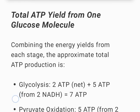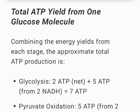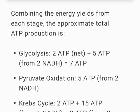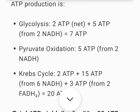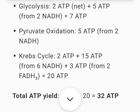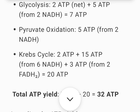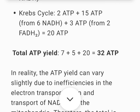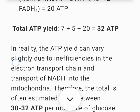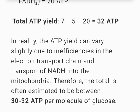Total ATP yield from one glucose molecule, combining the energy yields from each stage: Glycolysis: 2 ATP net plus 5 ATP from 2 NADH equals 7 ATP. Pyruvate oxidation: 5 ATP from 2 NADH. Krebs cycle: 2 ATP plus 15 ATP from 6 NADH plus 3 ATP from 2 FADH2 equals 20 ATP. Total ATP yield: 7 plus 5 plus 20 equals 32 ATP.